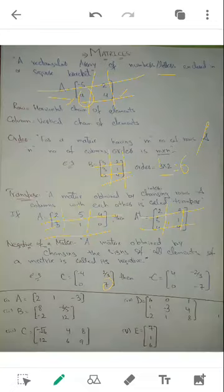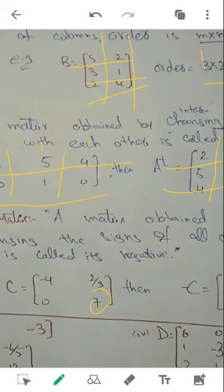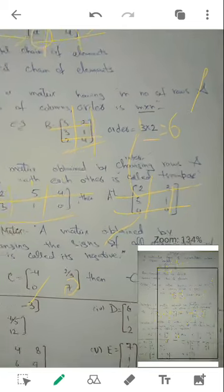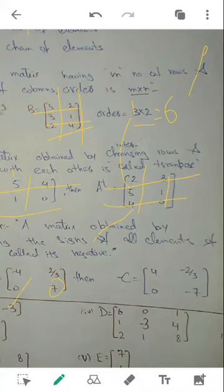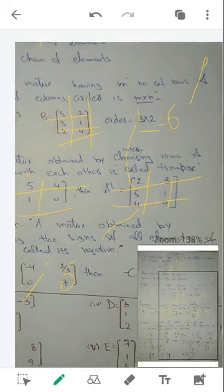The last definition: the negative of a matrix is obtained by changing the signs of all elements. Remember — change the sign of ALL elements. For example, matrix C with elements minus 4, 2/3, 0, and 7 — its order is 2×2. The negative of C will be: minus 4 becomes 4, 2/3 becomes minus 2/3, zero stays zero (never changes sign), and 7 becomes minus 7.